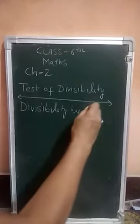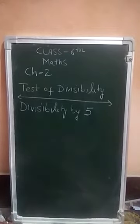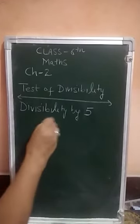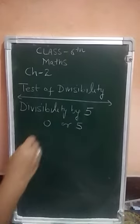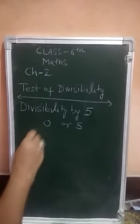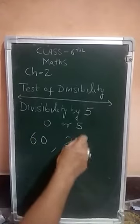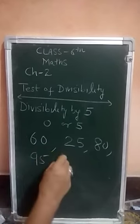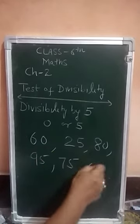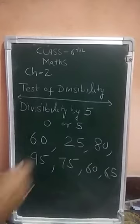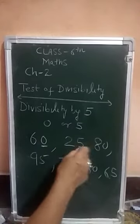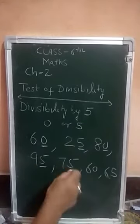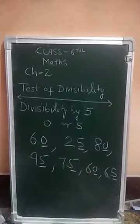Now, divisibility by 5. A number is divisible by 5 if the digit at 1's place is 0 or 5. For example, numbers like 60, 25, 80, 95, 75, 65 — we have to check the 1's place. If the 1's place of any number is 0 or 5, then that number is divisible by 5.